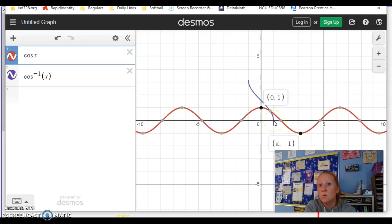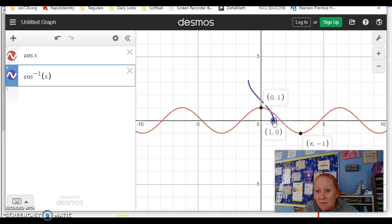Originally it was -1 to 1, and now my range was -1 to 1. And now my domain is -1 to 1. They're just swapping.